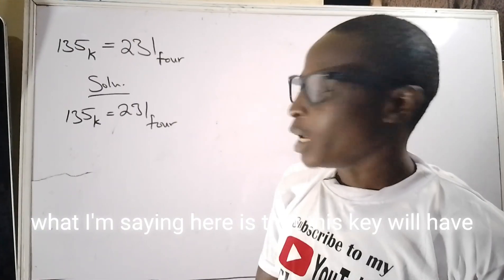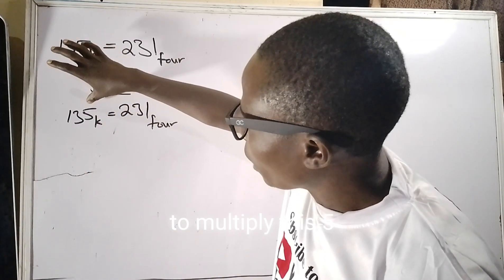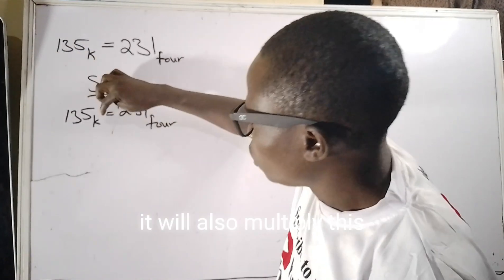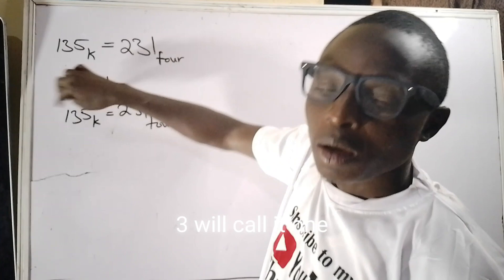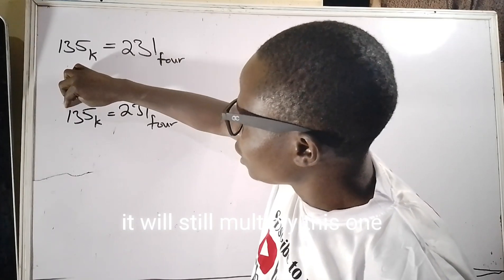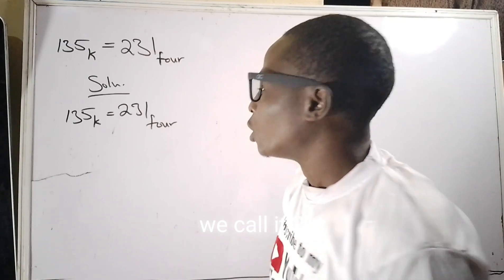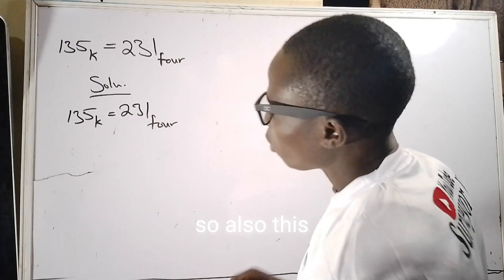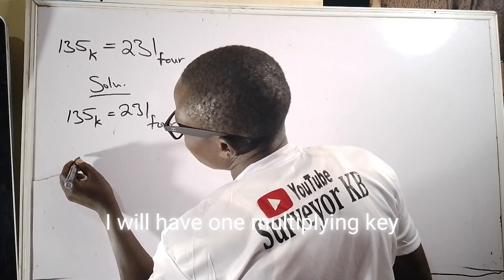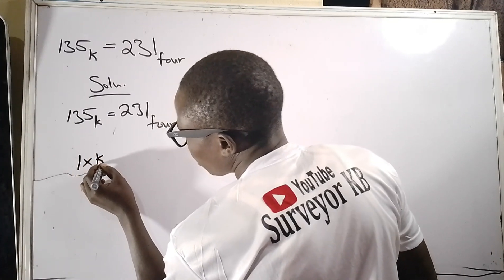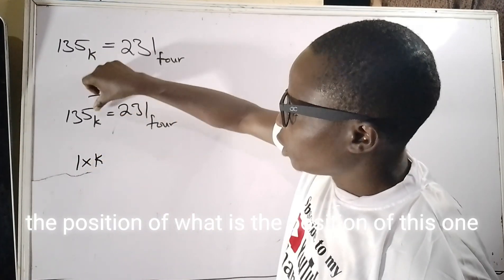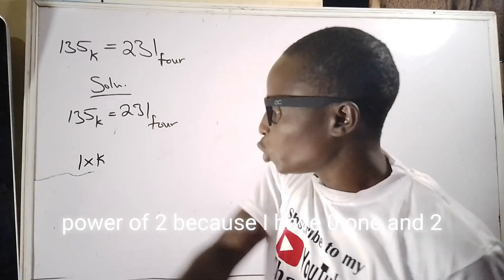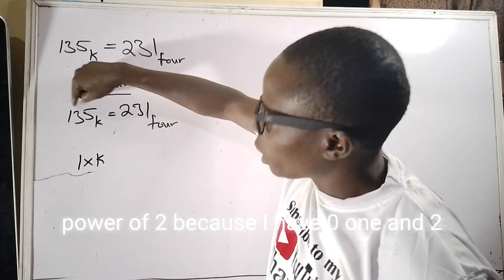What I'm saying here is that this k will have to multiply this five - we call it zero. It will also multiply this three - we call it one. It will still multiply this one - we call it two, but that two is not two, but is the power of two. So also, I will have one multiplying k, but what is the position of this one? The position of this one is in the position of power of two because I have zero, one, and two.